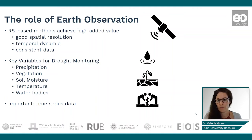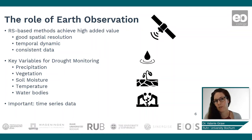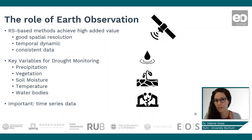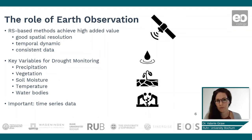We also have vegetation, where we can see what is already happening on the soil; soil moisture, to check the situation in the ground; and temperature, since higher temperatures indicate more drought stress or heat stress to the plant. Water bodies that decrease due to lack of rainfall and water availability are also important, and time series data allows us to compare a situation over time.